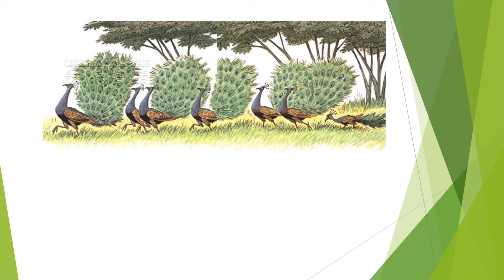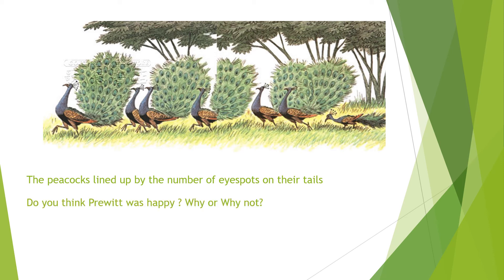For a second, what has happened or what do you remember about this picture? The peacocks lined up by the number of eye spots on their tails. Do you think Pruitt was happy? Why or why not? I would think no, because see how his head's hung way down. He looks kind of sad and his tail's not fluffy like the other ones.